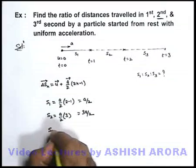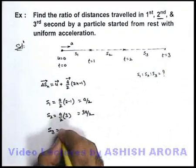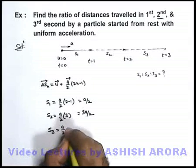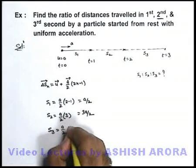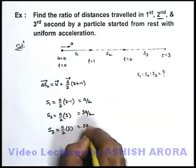We find out the distance travelled in the third second of motion. So we can write it (a/2)(2×3-1) which is 5, so this will be 5a/2.